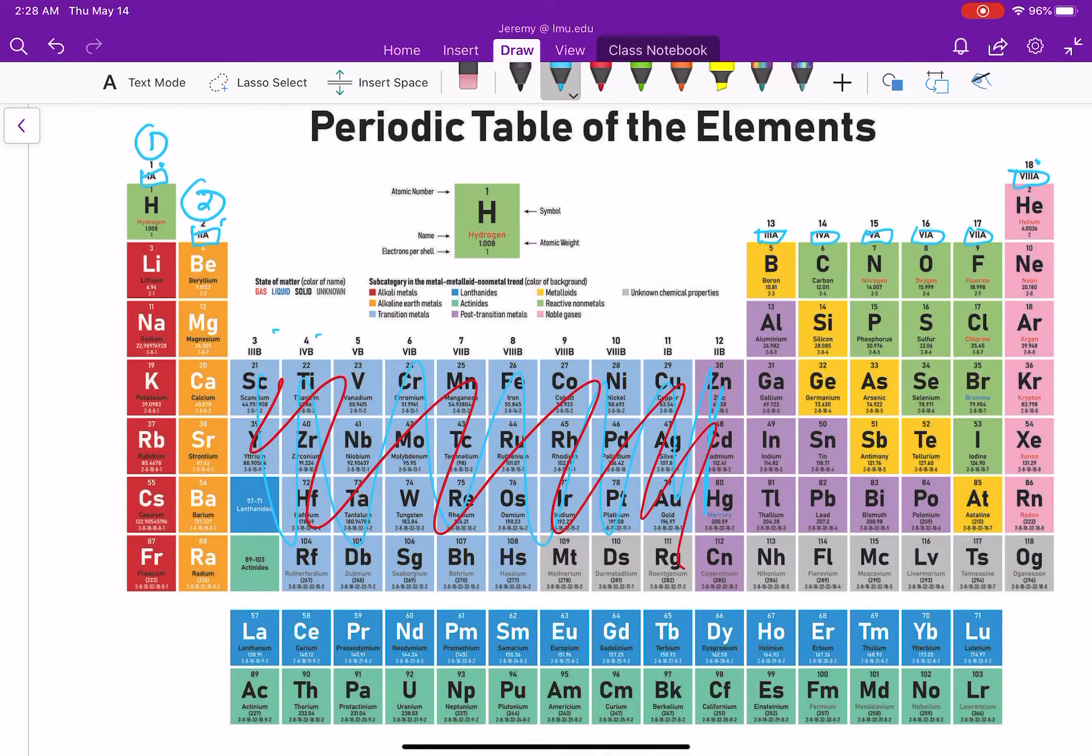We jump over to what's now called column 13 that has 3 valence electrons. Next is 4, 5, 6, 7, and then noble gases have 8. And the noble gases have full shells, so they don't really bond.